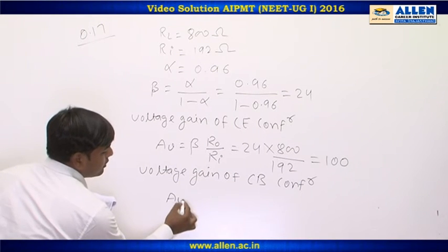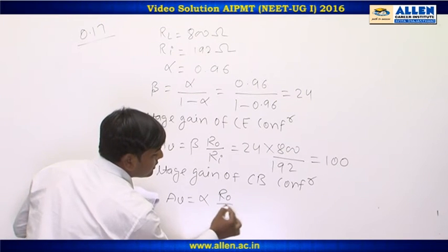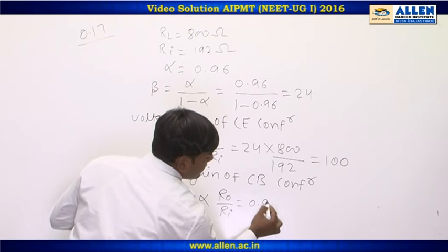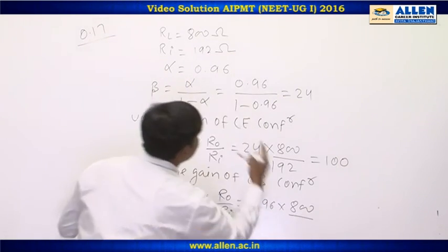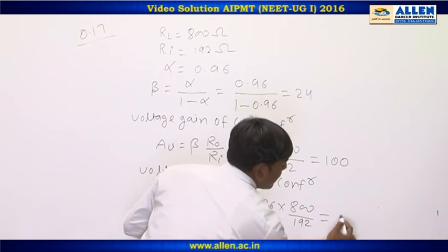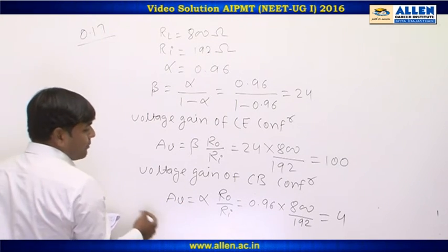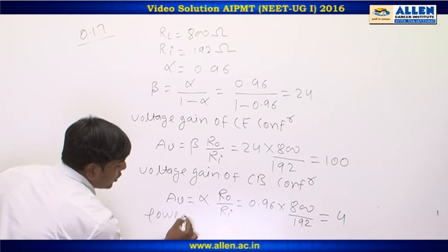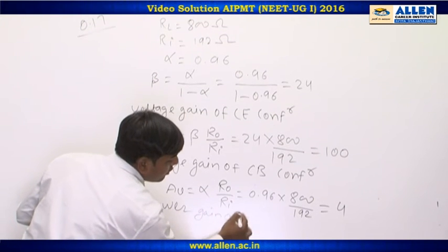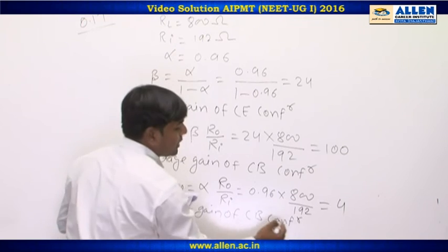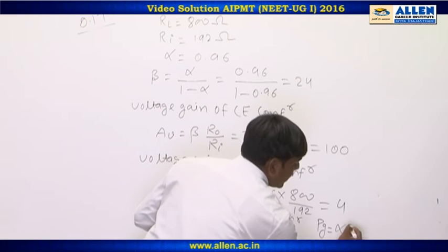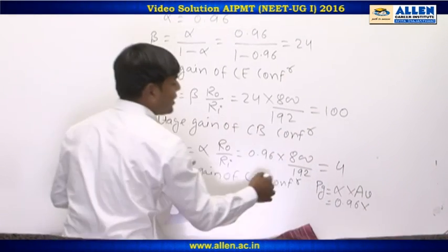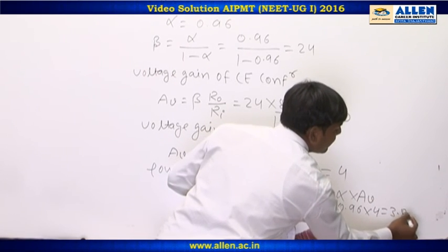For the common base configuration, voltage gain = alpha × (output resistance / input resistance). The alpha value given is 0.96, and the common base voltage gain comes out to 4. Then, power gain of common base = current gain × voltage gain = 0.96 × 4 = 3.84.